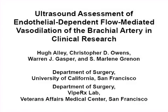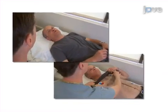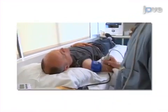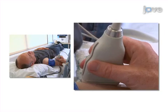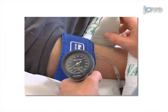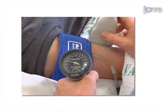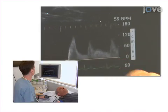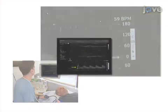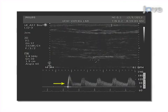The overall goal of this procedure is to measure endothelium-dependent flow-mediated vasodilation in the human brachial artery. This is accomplished by first preparing the subject, then measuring the cross-sectional diameter of the brachial artery with B-mode ultrasound. Next, the brachial artery is occluded for five minutes. The final step is to release the cuff and measure the mean arterial velocity from Doppler spectral waveforms.